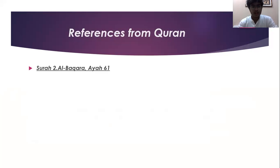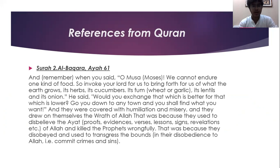References from Quran: Surah 2 Al-Baqarah, Ayah 61: 'And remember when you said, O Musa, we cannot endure one kind of food. So invoke your Lord for us to bring forth for us of what the earth grows — its herbs, its cucumbers, its garlic, its lentils, and its onions. He said: Would you exchange that which is better for that which is lower? Go down to any town and you shall find what you want.' And they were covered with humiliation and misery, and they drew on themselves the wrath of Allah. That was because they used to disobey the signs of Allah and killed the prophets wrongfully, and because they disobeyed and used to transgress the bounds.